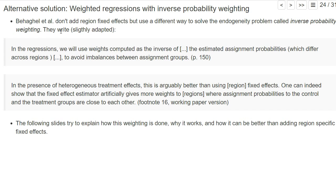Behagel et al. write in their studies, and I slightly adapted the text here, that in the regressions we will use weights computed as the inverse of the estimated assignment probabilities, which differ across regions, to avoid imbalances between assignment groups. So they use weighted regression using the inverse of the probability that in a particular region a person is assigned to either the treatment group or the control group. We will see this soon in an example. And in the working paper version they write in footnote 16 that in the presence of heterogeneous treatment effects, this inverse probability weighting is arguably better than using region fixed effects.